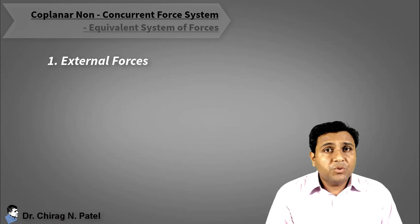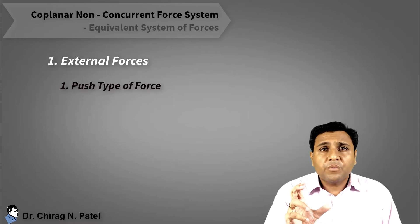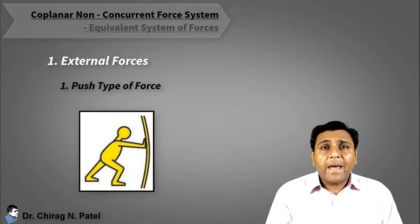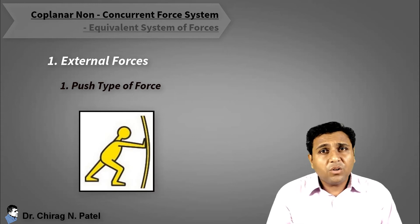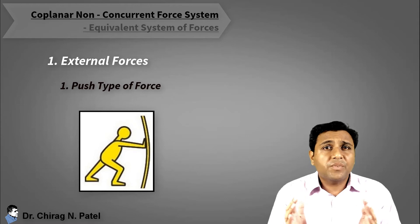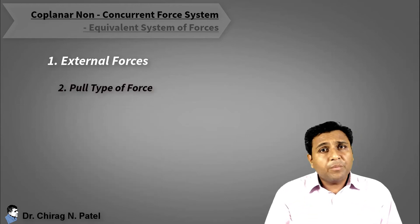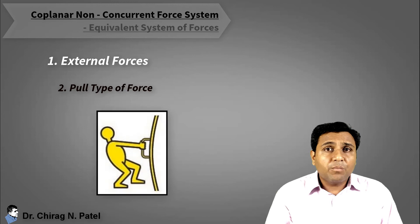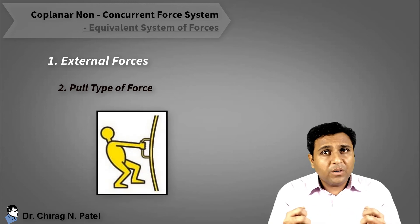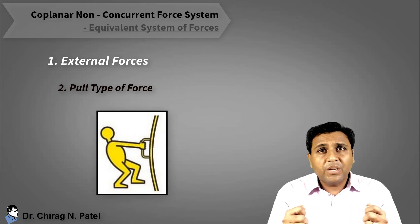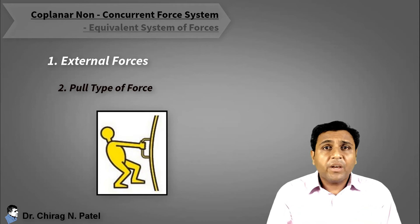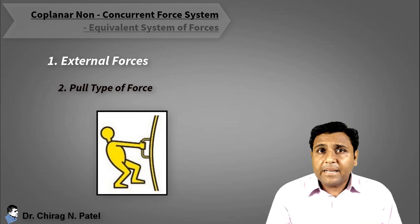External forces are of two types. Number one is push type of force — it is a force that acts on a body in push mode, like pushing a body, and can also be defined as a compressive type of force. Number two is pull type of force — it is a force that acts on a body in pull mode, meaning we are pulling the body, and can also be defined as a tensile type of force.